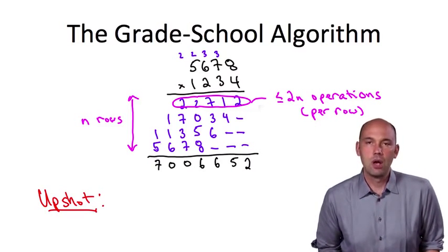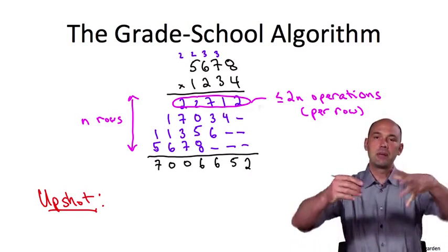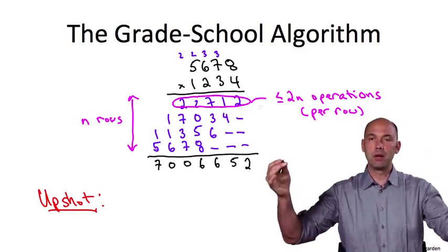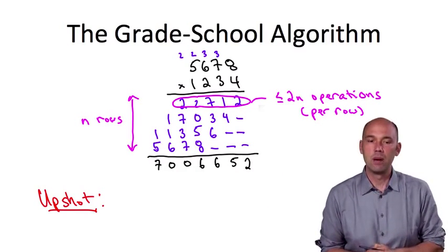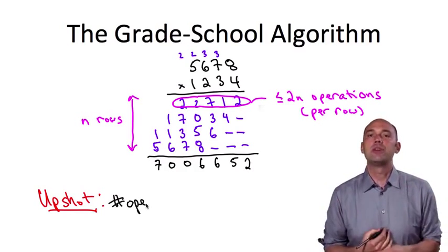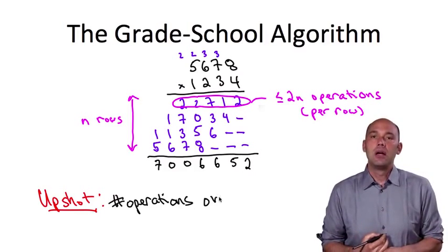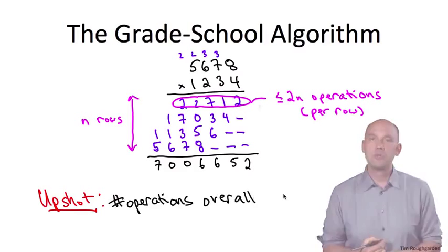So the upshot, the high level point that I want you to focus on is that as we think about the input numbers getting bigger and bigger, as a function of n, the number of digits in the input numbers, the number of operations that the grade school multiplication algorithm performs grows like some constant, roughly 4, times n squared. That is, it's quadratic in the input length n.